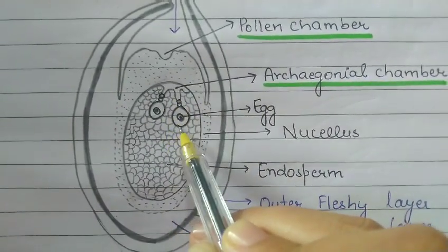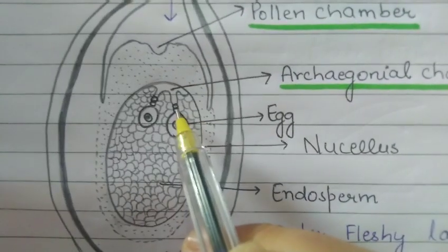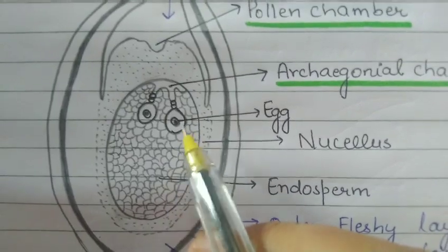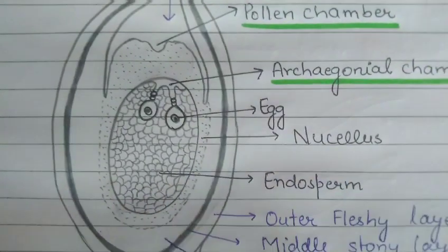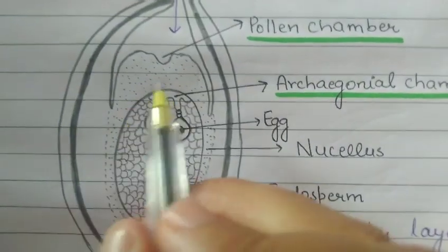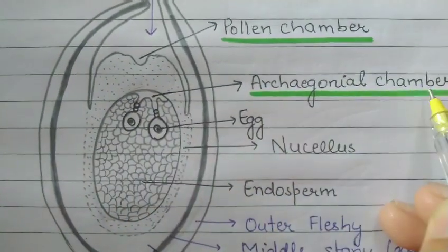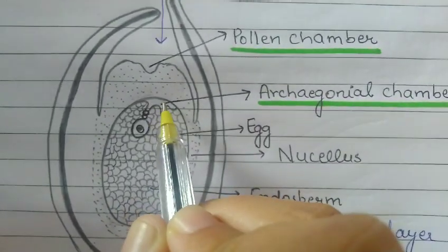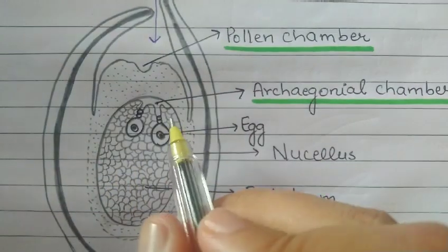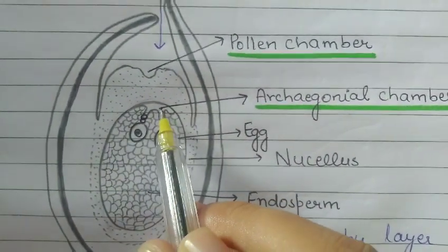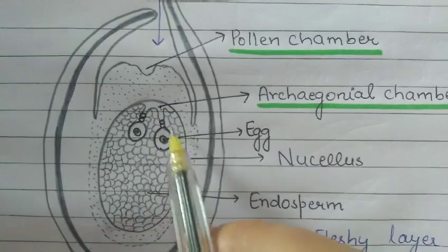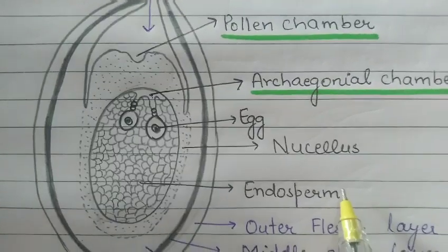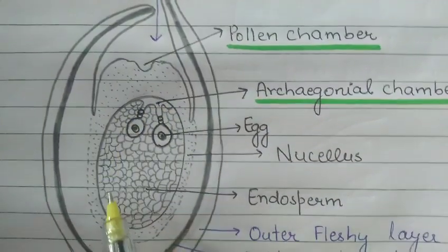This is the structure of archegonium which is called the neck. Venter canal cells degenerate before fertilization, as I explained in the previous video. There is also a formation of archegonial chamber where the pollen grain comes from. The pollen grain carries the sperm for further fertilization. The archegonial chamber is also part of the endosperm, which is called the female gametophyte. This whole structure is haploid.